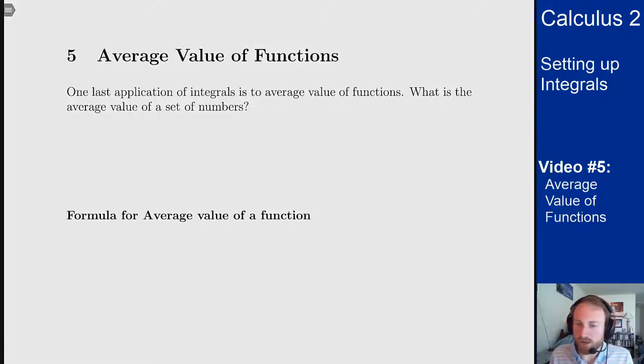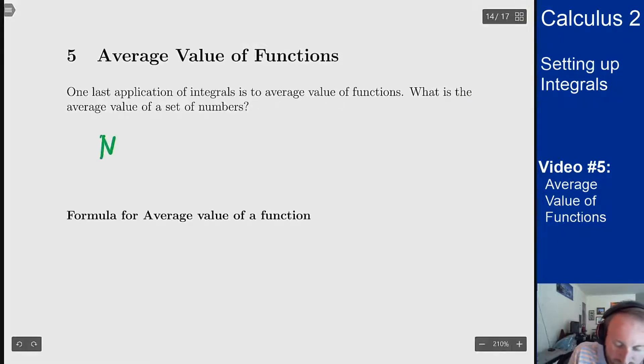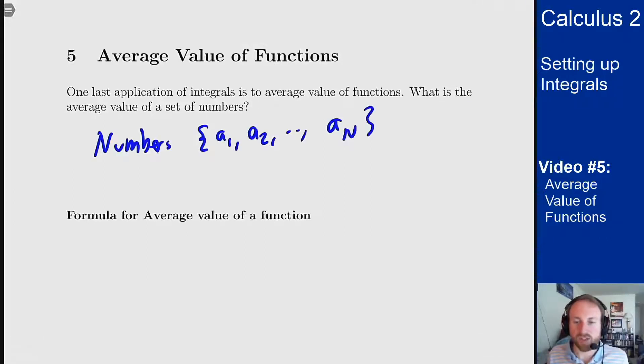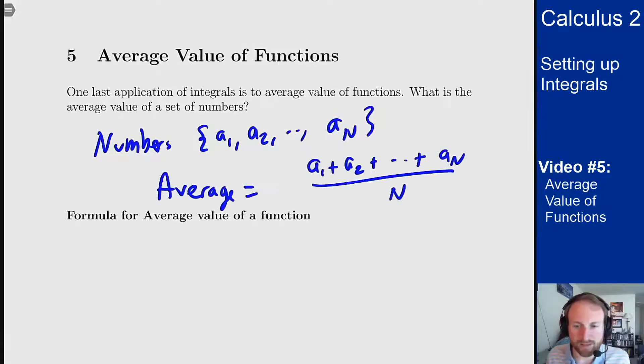So let's start with an initial statement. What is the average value of a set of numbers? Well, how do we average numbers? We add them up and then divide by however many numbers we had. So if I have numbers a1 through an, their average should be just adding them up and then dividing by n.